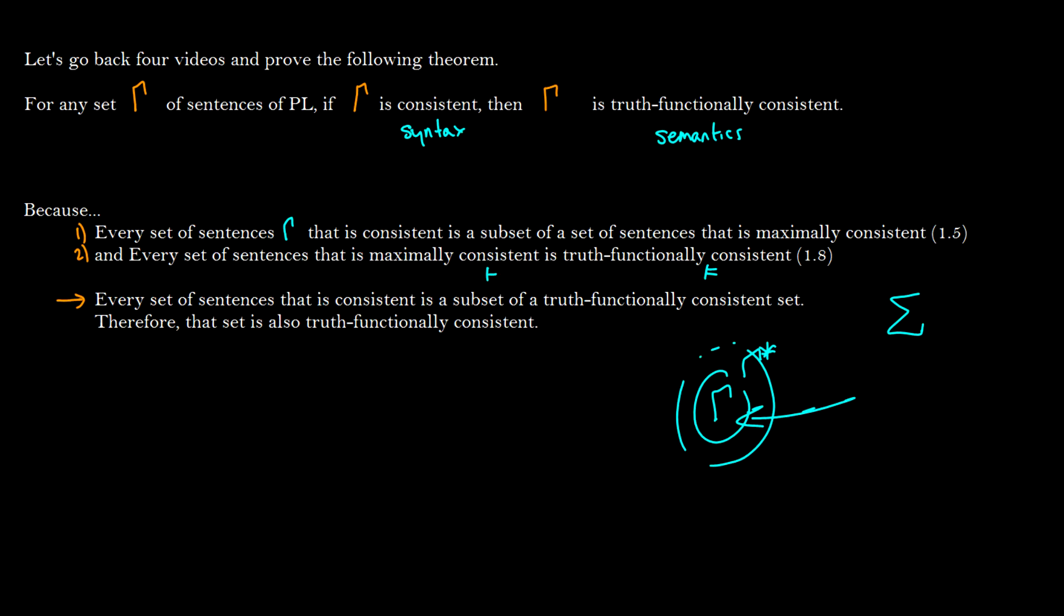Then what we can do is we can say well you know it's going to be a subset of some bigger set sigma star that is truth functionally consistent. That means it entails everything that is consistent. And because that entails everything consistent the smaller set is also going to do that. So sigma is going to do it.